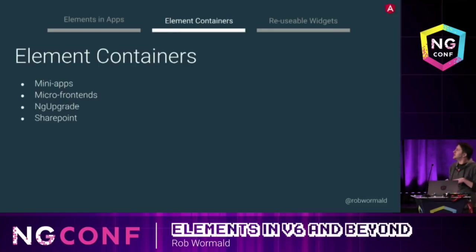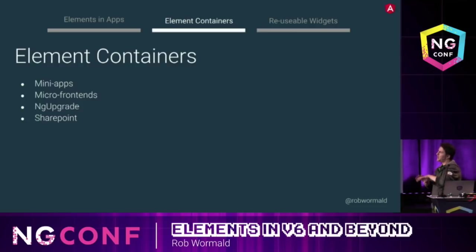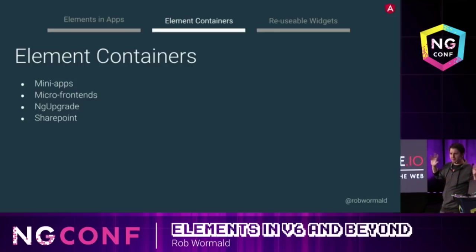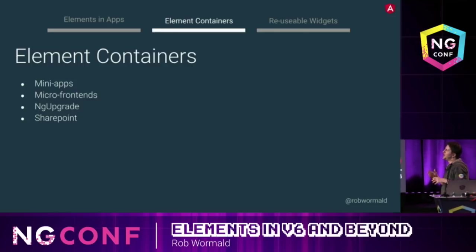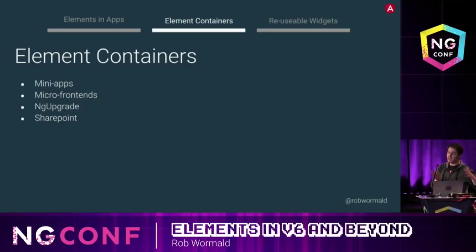The second use case is containers — packaging up applications to be used in different contexts. You might write a chat widget or support widget with all its dependencies — DI, HTTP, all of it — packaged up for others to consume. This more or less works today. There's a new term floating around called micro frontends, which we think is pretty interesting. These first two use cases — elements in Angular apps like AIO and CMS, and container ideas — are more or less ready to go today, and we're already using them on Angular.io.